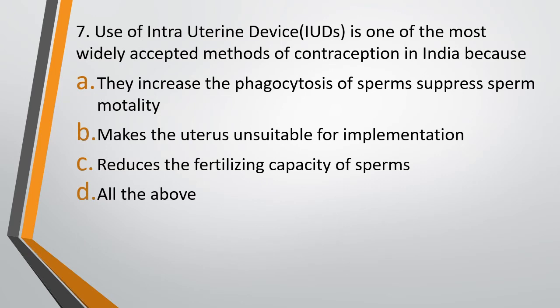Question 7. Use of intrauterine devices or IUDs is one of the most widely accepted methods of contraception in India because — Option A: They increase the phagocytosis of sperm, suppressing sperm motility. Option B: They make the uterus unsuitable for implantation. Option C: They reduce the fertilizing capacity of sperms. Option D: All of the above. The correct answer is Option D — all of the above. All three are mechanisms by which intrauterine devices act.